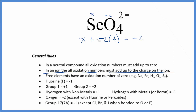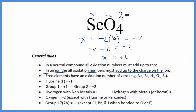We get minus 2 here. So X minus 8 equals minus 2. We add positive 8 to both sides, so X will equal positive 6. The oxidation number on Se in SeO4 2-, the selenate ion, is going to be positive 6.